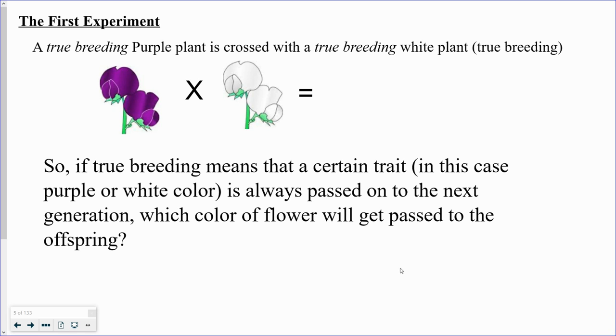So Mendel takes his pea plants and he starts looking at them to reproduce and start crossing the pea plants to figure out how characteristics and traits get passed on.